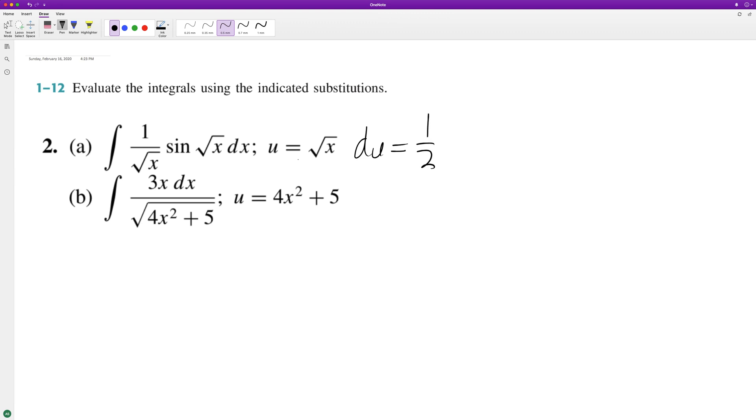x raised to the negative 1/2, which is the same thing as 1 over the square root of x. So the only thing we're missing here is to get du equal to dx, we need to multiply du by 2.